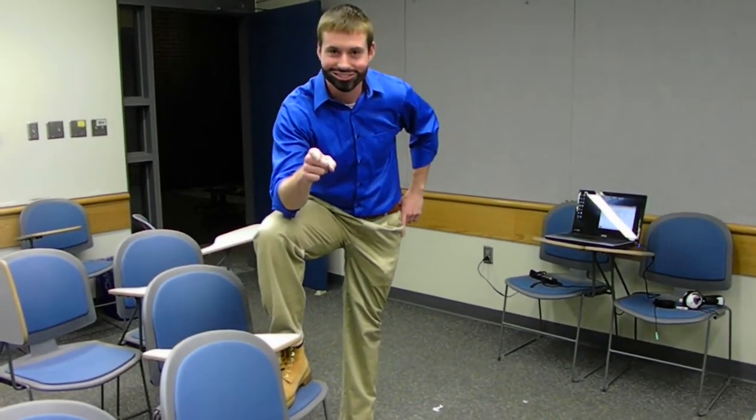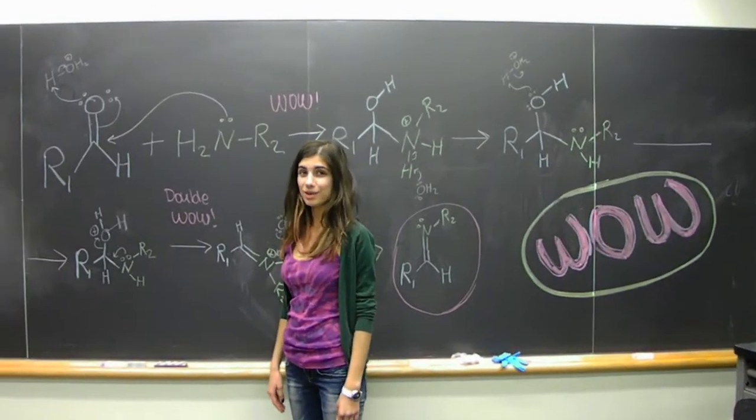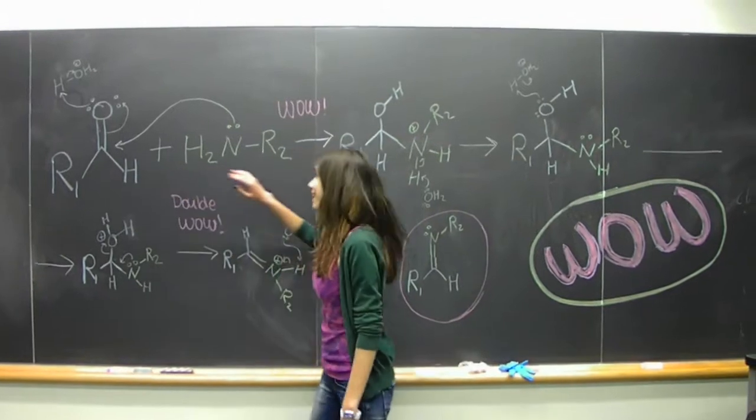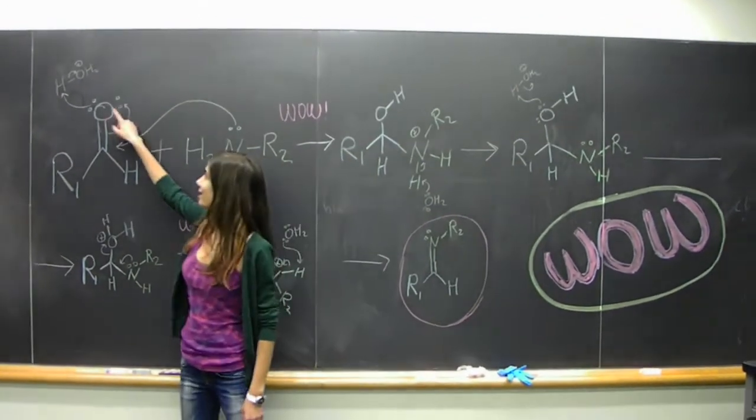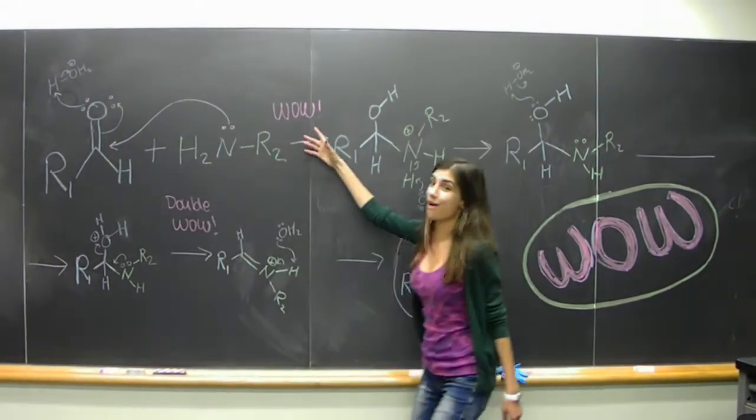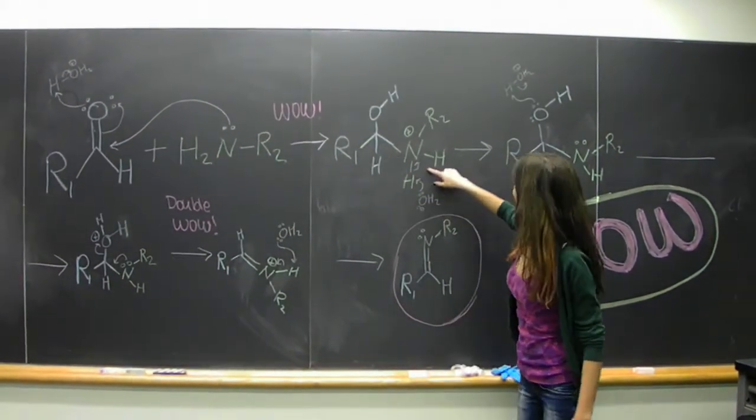Here's how it works. In this part of the reaction, we are making the imine from the starting material aldehyde and amine. Right here, the oxygen gets protonated and then the nitrogen hops onto the carbon. Wow! Amazing stuff, right?